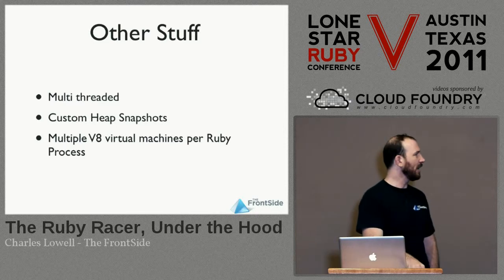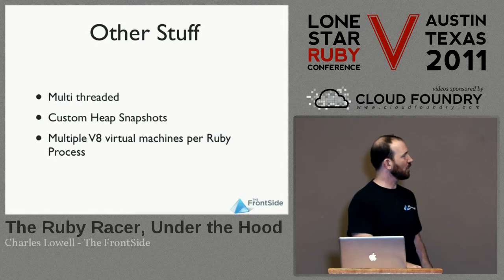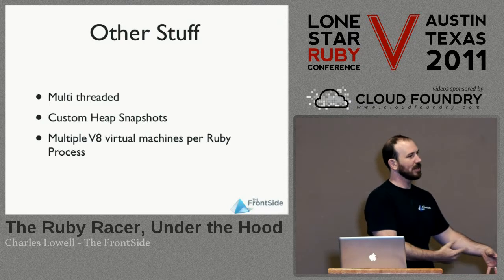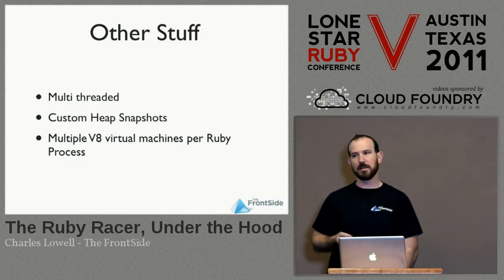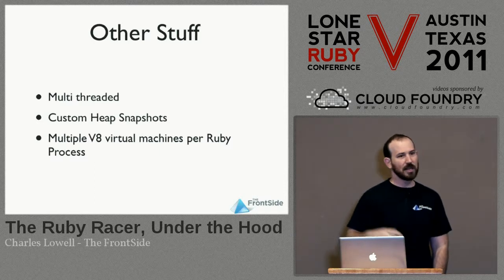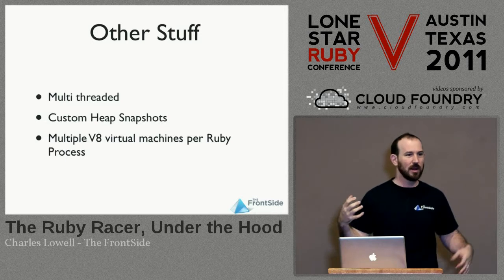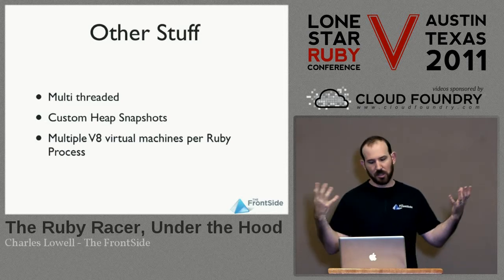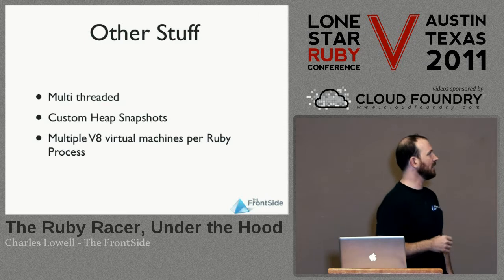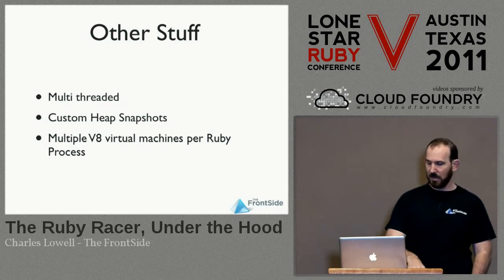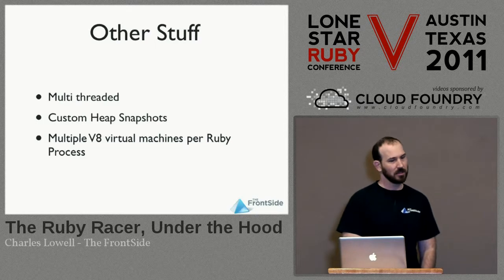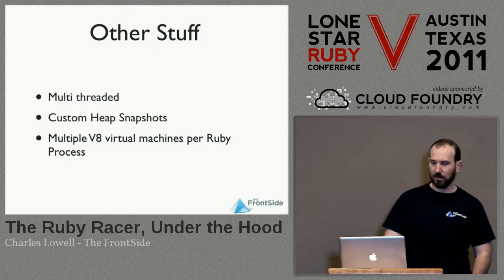The other thing is custom heap snapshots. V8 actually supports the ability to serialize its entire heap to disk, and then when you're starting up the interpreter you can just thunk that thing right into memory and you're off to the races — that's one of the ways it achieves the speed that it does. So you can actually create custom heaps: if you have a bunch of objects and class hierarchies you know are going to be in your application, you can serialize those structures and thunk them into memory. They also now have support for having completely separate V8 interpreters inside a single process.